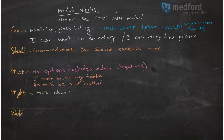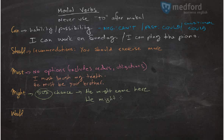'Might' is used when you have about a 50% chance. The number isn't exact, but it helps us understand. So if I say 'he might come here,' there is a 50% possibility. Or 'he might be happy' — there's a chance, about 50%, that he is happy.